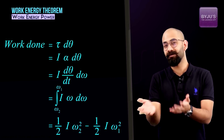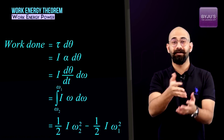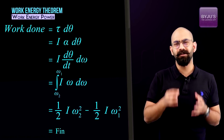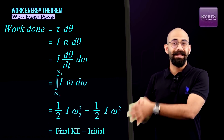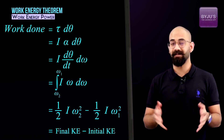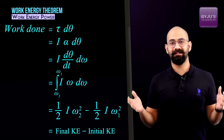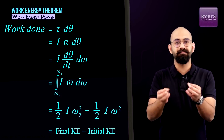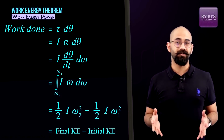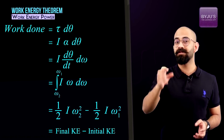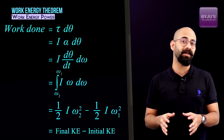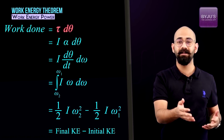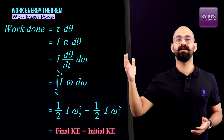And ½I·ω² is the rotational kinetic energy. So we get that the work done equals the final rotational kinetic energy minus the initial rotational kinetic energy — that's exactly the work-energy theorem. This confirms that all our definitions are consistent, and we can use the work-energy theorem with rotational analogs: net work done, which is torque times dθ, equals the change in kinetic energy.